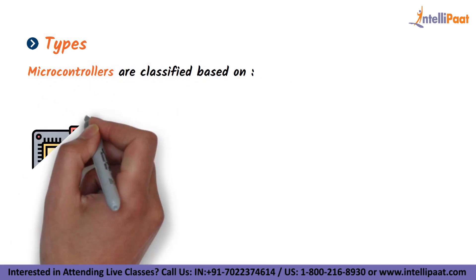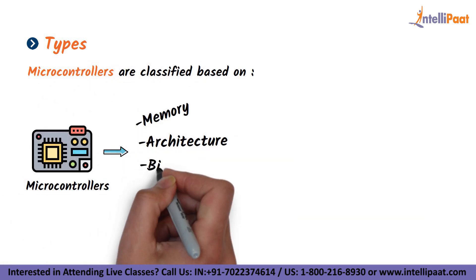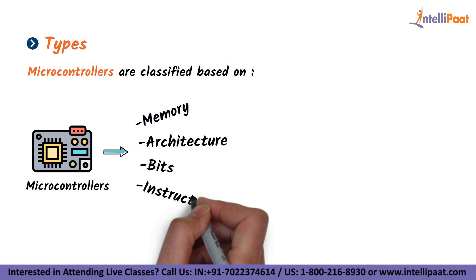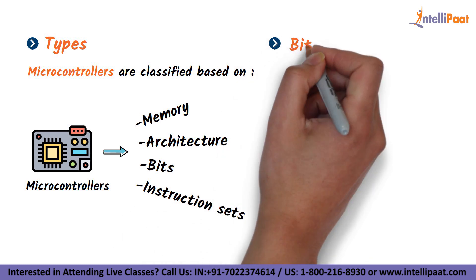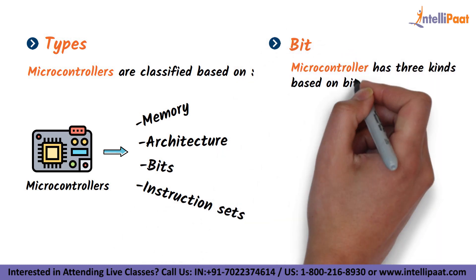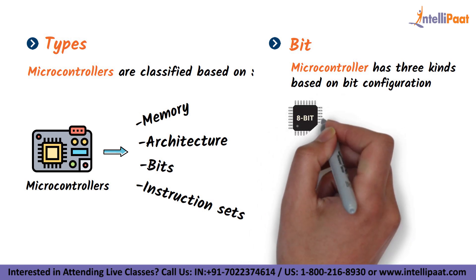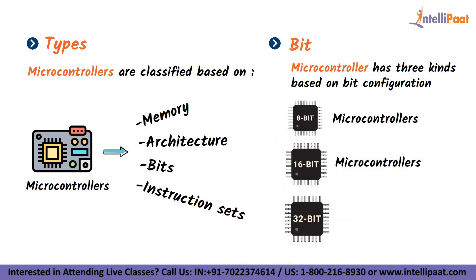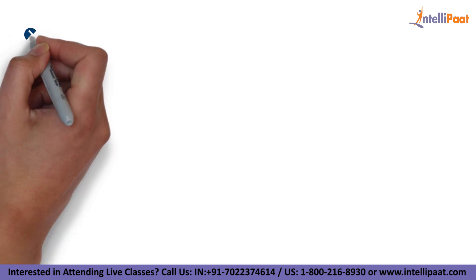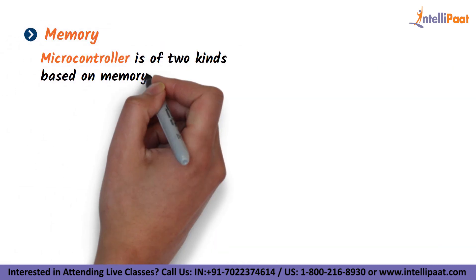Microcontrollers are classified based on their memory, architecture, bits, and instruction sets. Looking at the classification based on bit configuration, we have 8-bit, 16-bit, and 32-bit microcontrollers. They are also classified into two kinds based on memory arrangement.